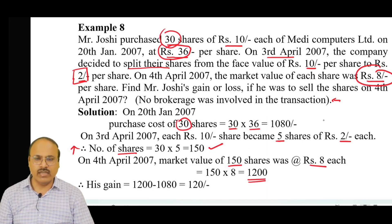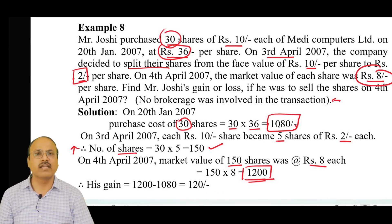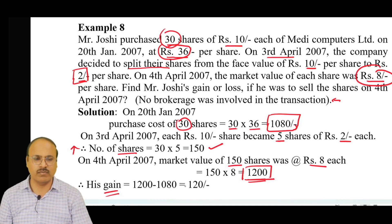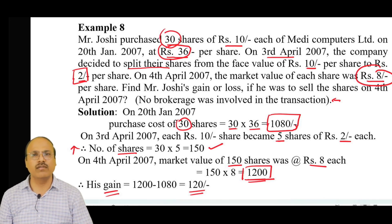Initially he had purchased the shares for rupees 1,080 and now he has rupees 1,200 as per the market value. Since 1,200 is greater than 1,080, he has definitely gained. The gain is 1,200 minus 1,080, which equals rupees 120. These are the kinds of problems you encounter when doing problems related to splitting of shares.